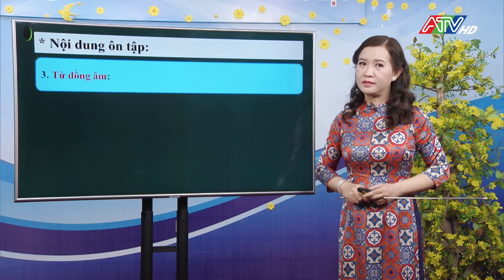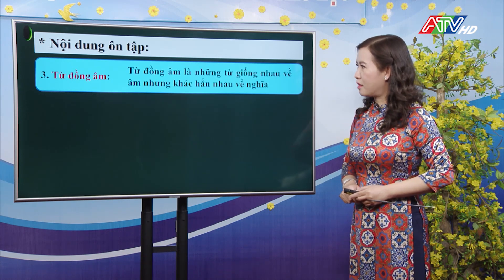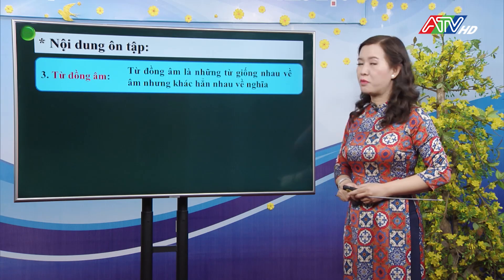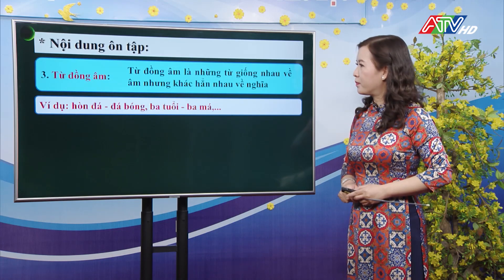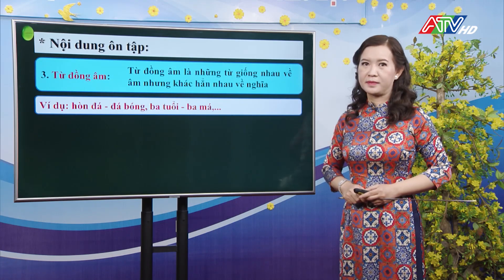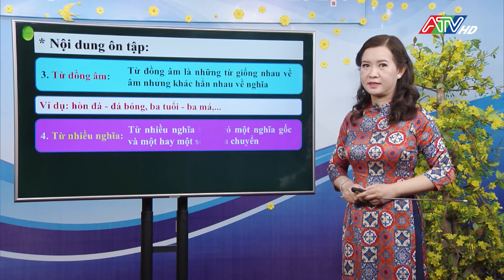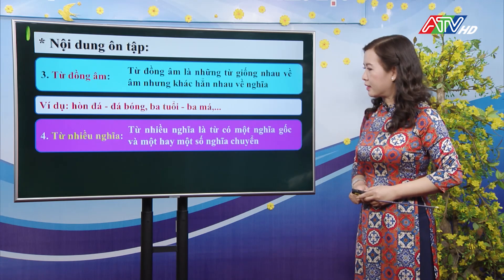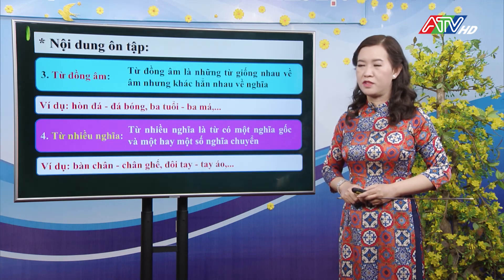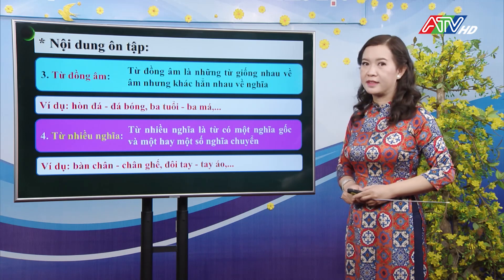Từ đồng âm là những từ giống nhau về âm nhưng khác hẳn nhau về nghĩa — ví dụ: hòn đá / đá bóng; ba tuổi / ba má. Từ nhiều nghĩa là từ có một nghĩa gốc và một hay một số nghĩa chuyển — ví dụ: bàn chân / chân ghế; đôi tay / tay áo.